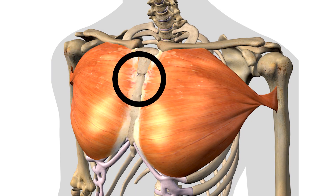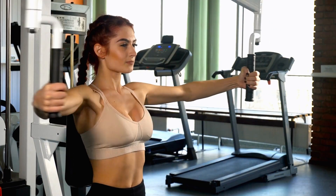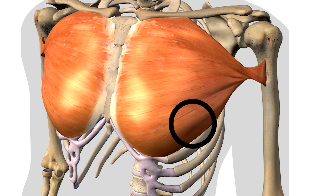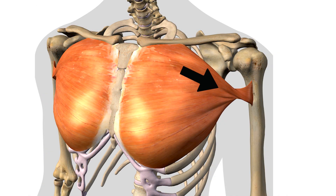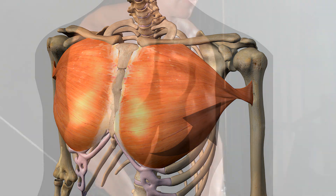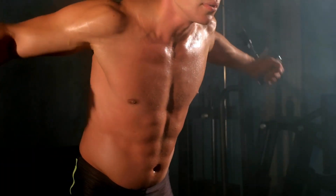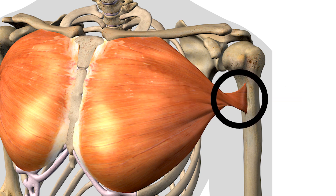The sternal section is the largest section of the pec major and it runs directly across the chest wall. As you can see, it tucks underneath the clavicular branch. The sternal branch pulls the arm directly across the chest. The costal branch tucks underneath, and what you have with this muscle — as with many other muscles — is a twist that occurs in this area. So the lowest part of the muscle attaches highest into the humerus and will pull the arm across but with a slightly downward pull.